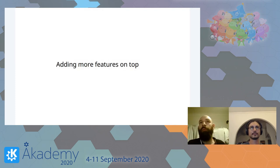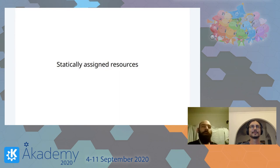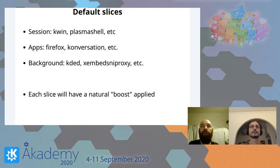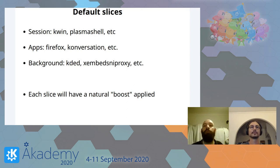Now we can go to the next step: adding features on top. We've got fair resource distribution — now we can make unfair resource distribution. We can statically assign weights to various services and programs. There will be three default slices: the session slice containing KWin and Plasma Shell — things you don't want killed or stuttering, particularly on Wayland where KWin is doing important jobs; the application slice where apps compete for CPU and memory only within that slice; and the background services slice where we dump everything that still needs to run but doesn't need as much priority.